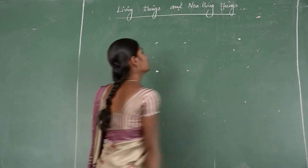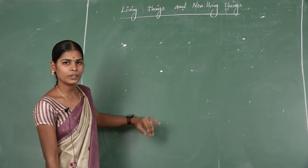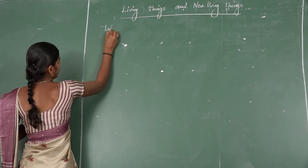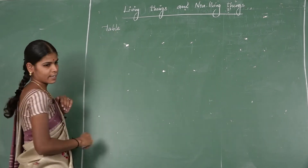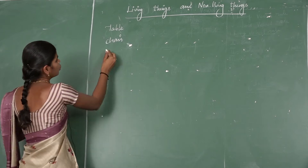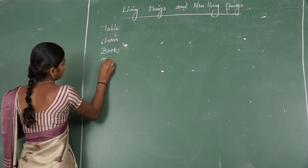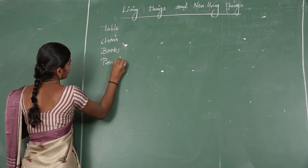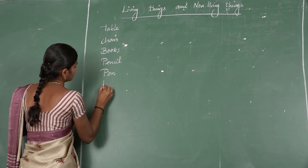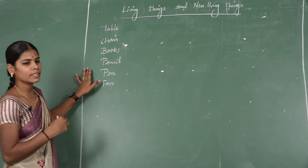So what is the topic? Living Things and Non-Living Things. Okay students, now you see in your class what are the things that are available. You say some of them. First one: a table, chair, books, pencil, pen, fan. These are available in our class.